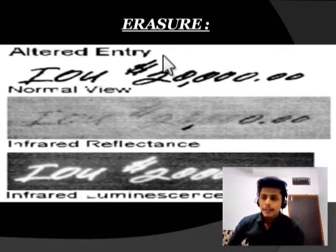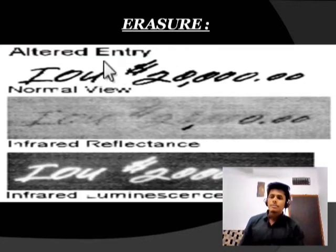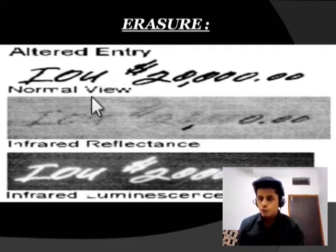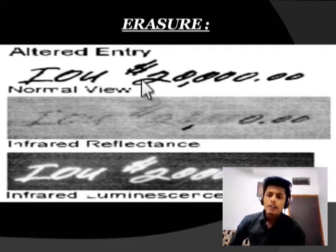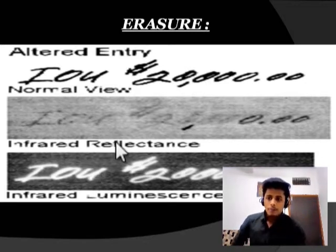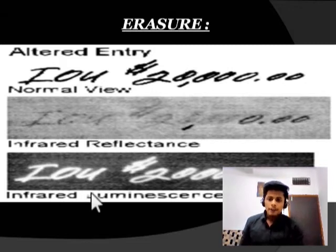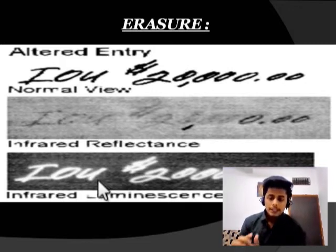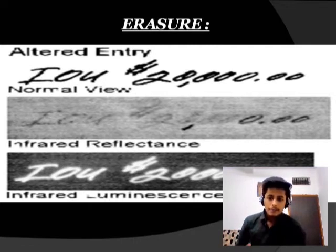In the next erasure example, the normal view showed 20,000 written — we cannot see what was erased in the normal view, but with infrared reflectance we can see clearly what was originally written on that document.